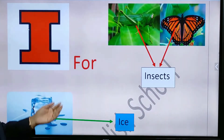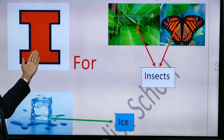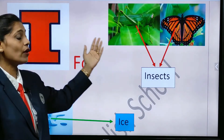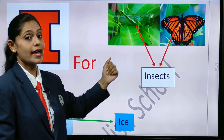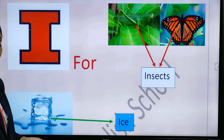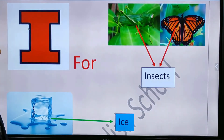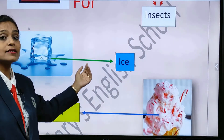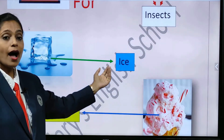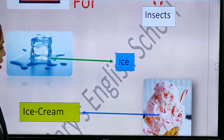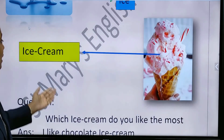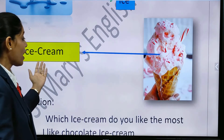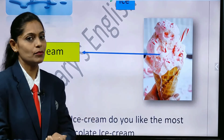You are going to repeat after me. I for insect. All of you — I for insect. Very good. Then I for ice. I for ice. And the last one — I for ice cream. I for ice cream.